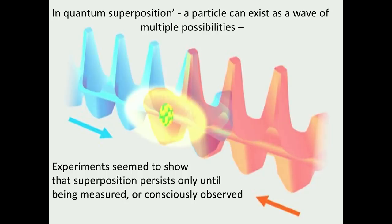Now, in the early days of quantum mechanics, experiments seemed to show that superposition persists only until being measured or consciously observed. Niels Bohr and others knew that their results were multiple coexisting possibilities, but when they measured and looked at the results, they got one result. And Bohr and others came up with the idea that measurement, or specifically conscious observation, caused collapse of the wave function.